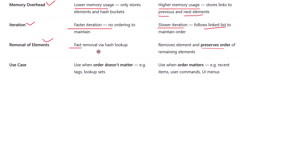Finally, when should you use each one? HashSet is ideal when order doesn't matter and you just want the best possible performance — think of scenarios like checking for duplicates, building lookup tables, or storing unordered tags. LinkedHashSet is the right choice when order matters, for example if you are storing a list of recent items, commands, or menu options and want to remember the order in which they appeared.